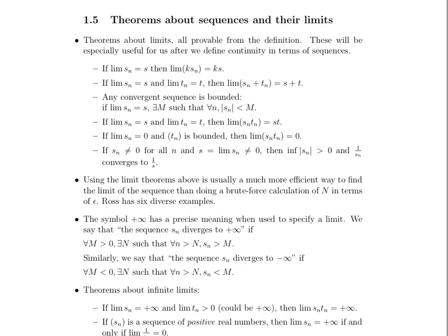If we have two different sequences, one that converges to s and one that converges to t, then the limit of the sequence where each term is the sum — the first term equals the first term of this sequence plus the first term of that sequence, the second term is the sum of the second terms — the limit of the sum of two sequences is equal to the sum of the limits, s plus t.